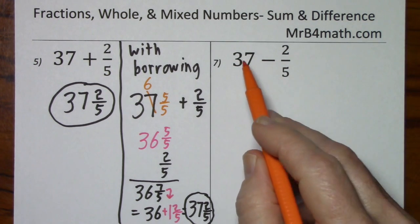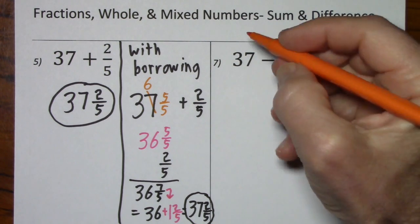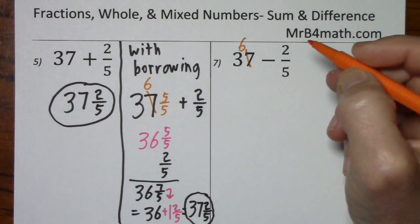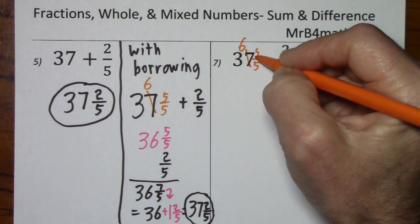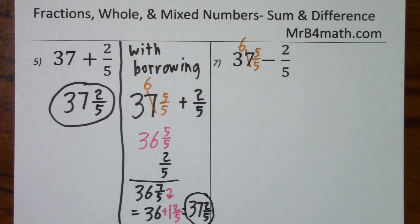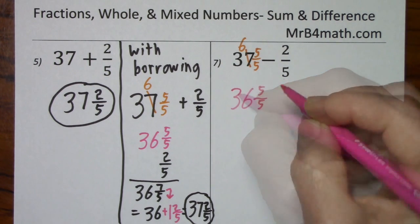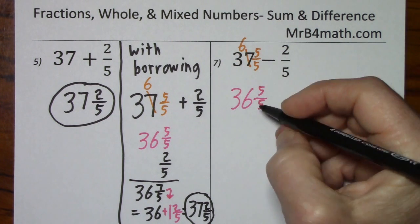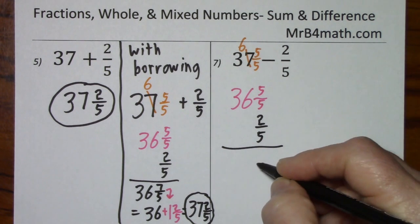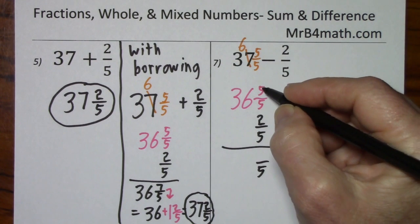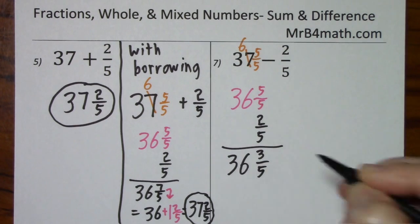Now, looking at this one where the signs are different, positive and negative, we will need to subtract. We'll need common denominators. So, 7 becomes 6. And the one that I just borrowed, I'm going to write with the denominator of 5, thus a numerator of 5. So, we have 36 and 5 fifths. We'll put the 2 fifths underneath the fraction. We're certainly keeping our denominator of 5. 5 subtract 2 leaves us with 3. 36 just comes down.